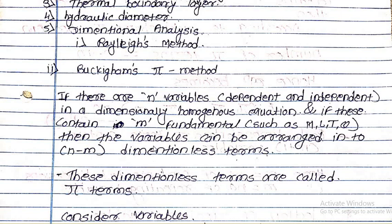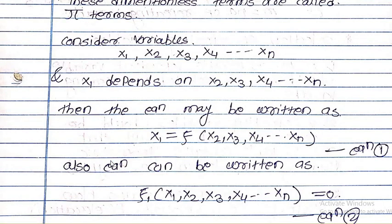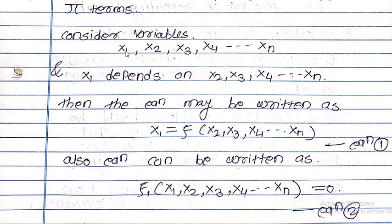According to Buckingham Pi theorem, we can arrange all variables in n minus m format — that is, n minus m equals the number of dimensionless terms. These dimensionless terms are called pi terms. We consider variables starting from x1, x2, x3, x4 up to xn, where x1 depends on x2, x3, x4 up to xn.